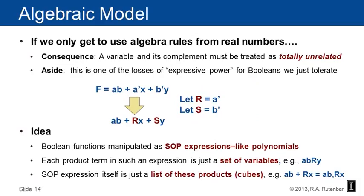So if you only get to use algebra rules from real numbers, one consequence that's very important and very immediate is that a variable and its complement must be treated as unrelated, totally unrelated. And this is really one of the principal losses of expressive power for Booleans in the algebraic model, and we just tolerate this. So if you have a Boolean expression like F is ab plus a bar x plus by b bar y, I need to get rid of those complements. I can't have a's and a bars floating around in the same Boolean expression. I can't have b's and b bars. So I'm going to let R equals a bar and S equals b bar.